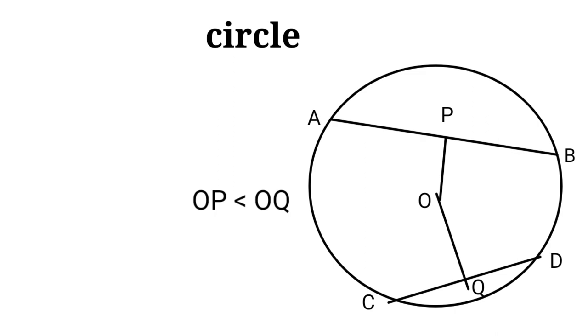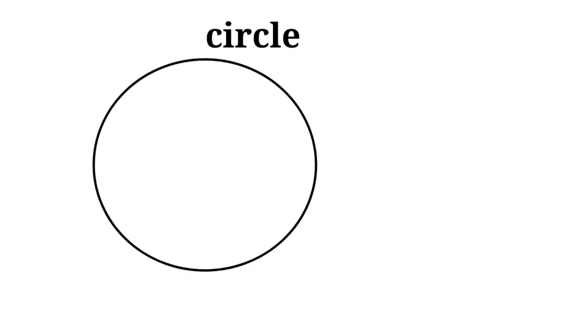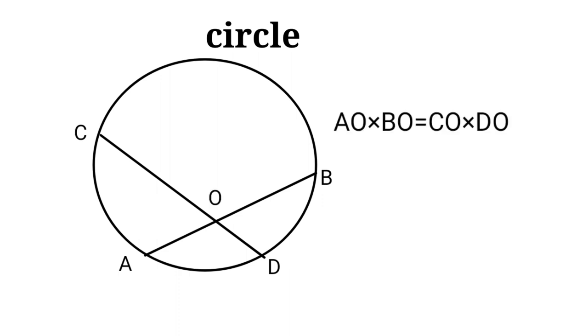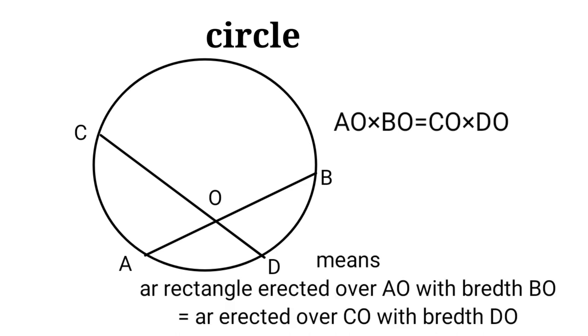Now two chords AB and CD may intersect, say at O. Then AO times BO equals CO times DO, meaning two chords in a circle intersect in the same ratio. The area of rectangle AO with breadth BO equals the area of rectangle CO with breadth DO.